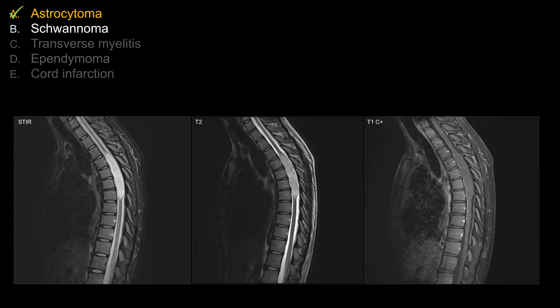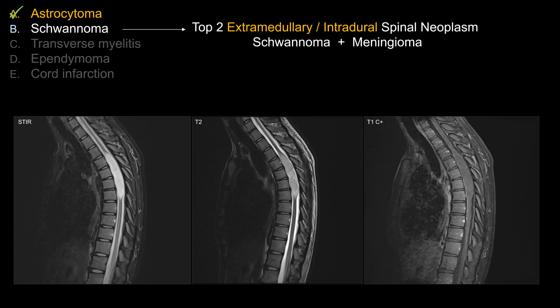What about other answers, such as choice B? We can eliminate that possibility pretty quickly because location is very important. Schwannoma is not an intramedullary lesion. If I show you a lesion that's intradural extramedullary, you should think about schwannoma versus meningioma. Both schwannoma and meningioma tend to enhance quite avidly, so they don't fit this case. But most importantly, the location absolutely does not fit, so you can eliminate B very quickly.